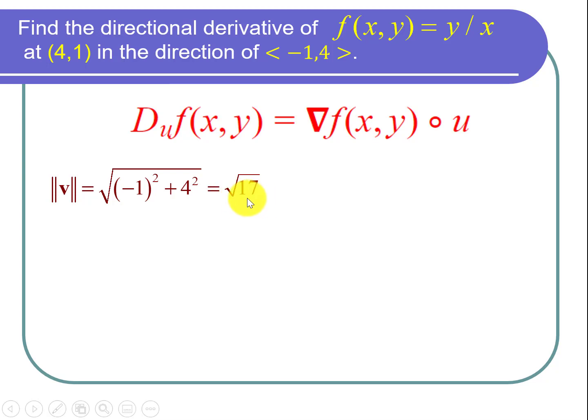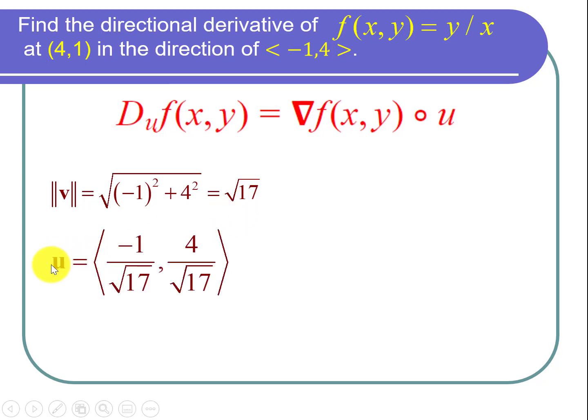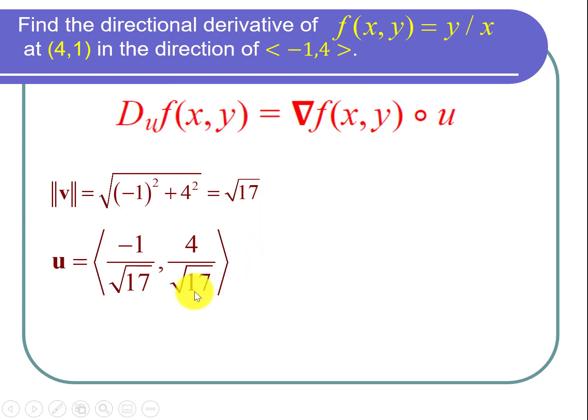Once we've found the magnitude of the vector, to find the unit vector in its direction, we just divide each component by that magnitude. So u is equal to negative 1 divided by the square root of 17 comma 4 divided by the square root of 17. There's our unit vector u.